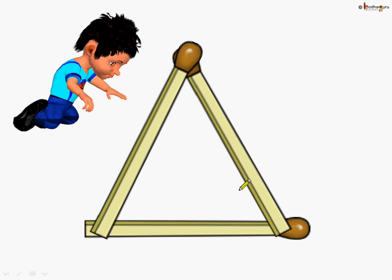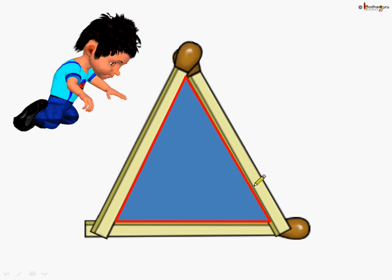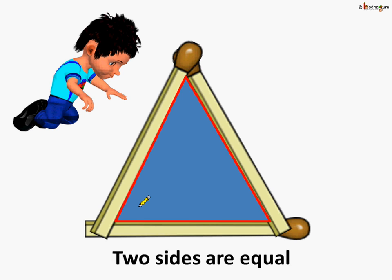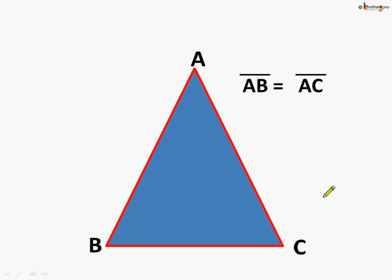Next, Aman drew another type of triangle. If we measure the sides, we will figure out that two sides are equal. This side and this side have the same length. So in triangle ABC, segment AB is equal to AC — meaning this side is equal to this side.